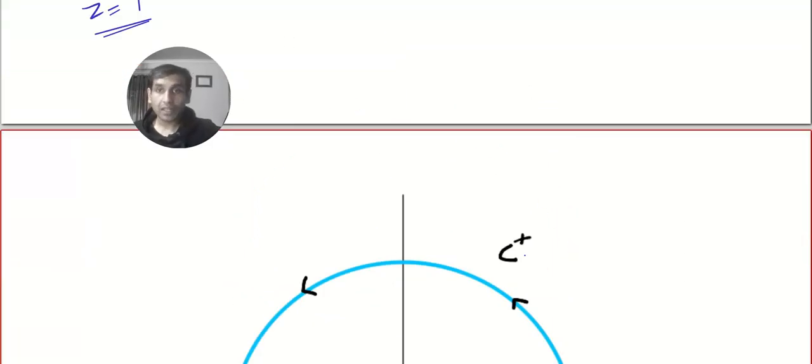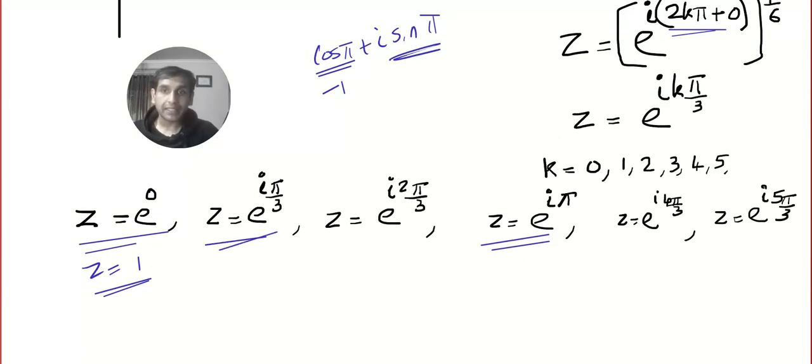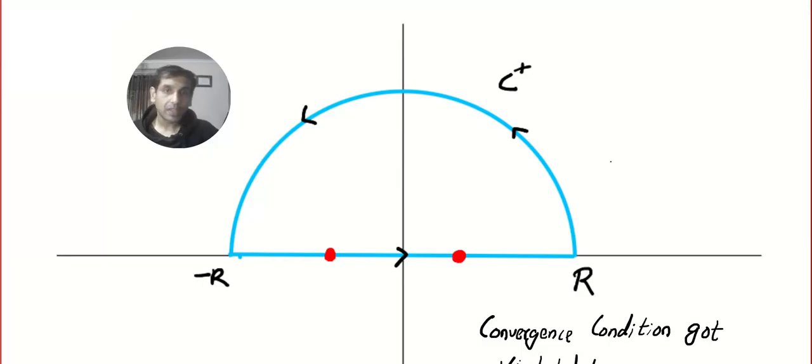So I have a diagram here. And by the way, pi by 3 means 60 degrees, 2·pi by 3 will be 120 degrees, this will be 240 degrees—240 degrees means it went down—and this will be 300 degrees.